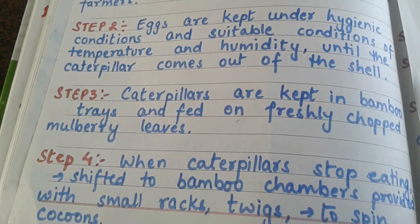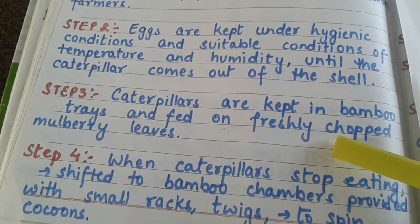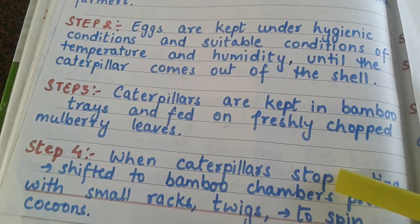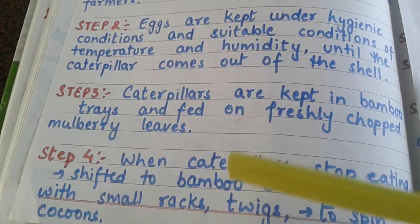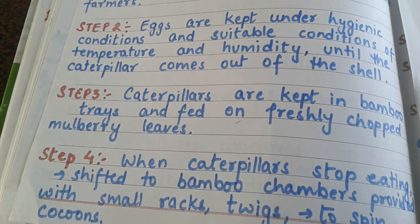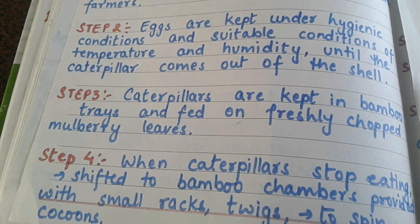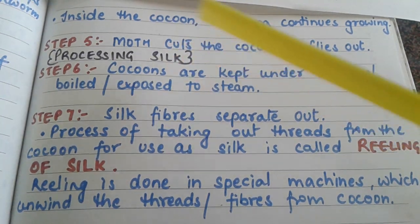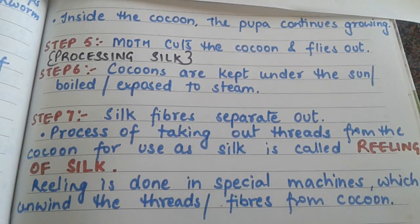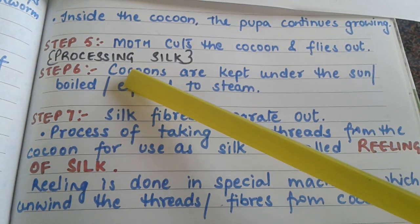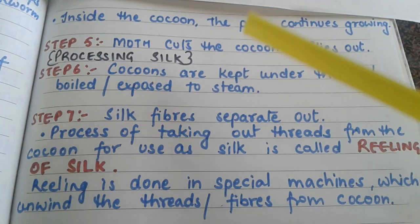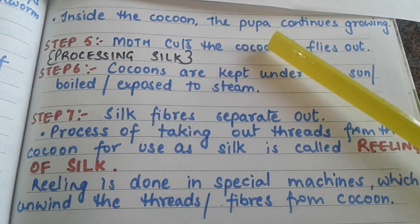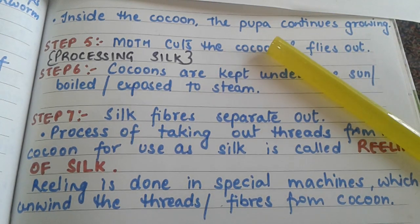In the next step, when the caterpillars stop feeding, they are shifted to bamboo chambers where they are provided with small racks and twigs so they can attach to them and spin their cocoons. Inside the cocoon, the pupa continues to grow. In step five, the moth will cut the cocoon and fly away. The entire process of rearing silkworms is known as sericulture.